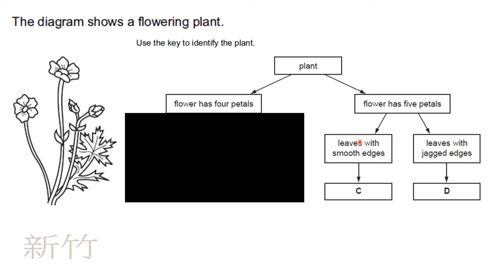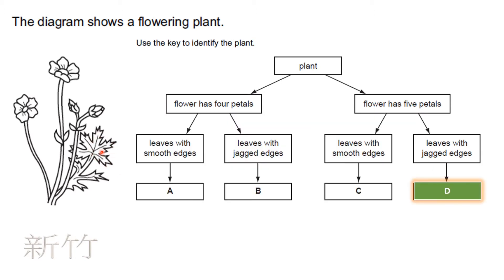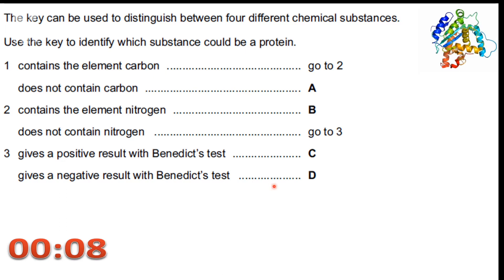Let's move on to the next trait, which is about the leaf. Check whether it has a smooth edge or a jagged edge. This leaf has a jagged edge, so the answer is going to be D.